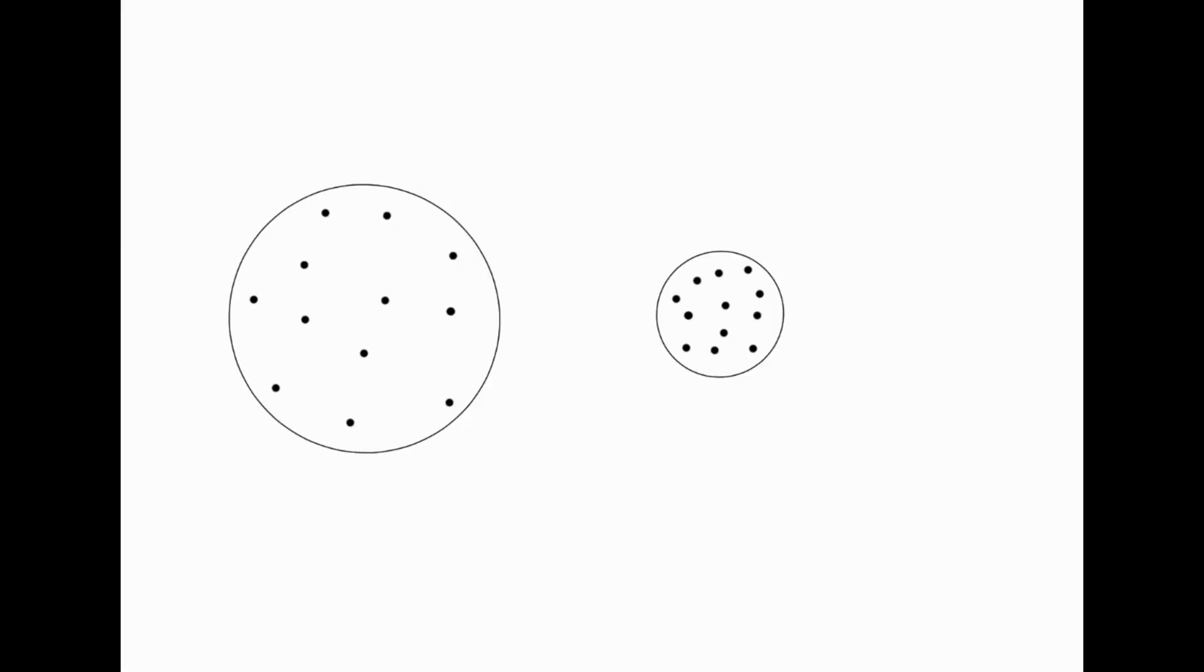Let's imagine an experiment again where we have fixed amounts of gas inside this container here, which has a certain volume. Let's call this one Situation 1. Over here, we've got the same amount of gas, the same number of particles, but we've squashed it into a smaller volume. Let's call this one Situation 2.